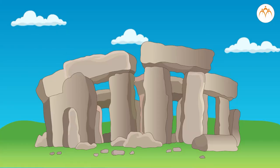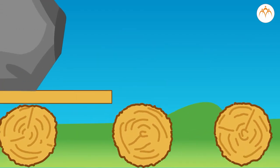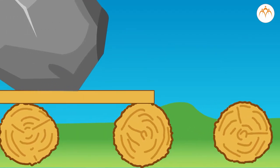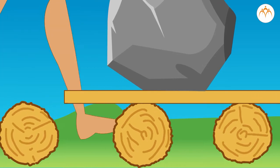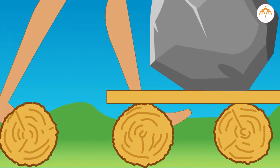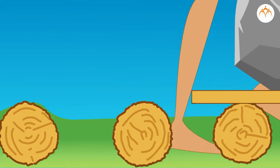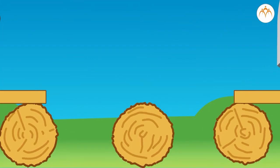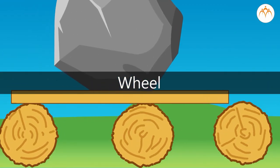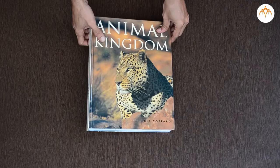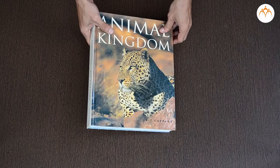Ancient civilizations built cities out of stone. Heavy stone blocks were moved by placing logs underneath them. The block could move more easily on logs than on the ground. Logs worked like a wheel. This book is heavy — it takes a lot of effort to move.